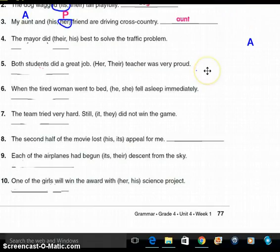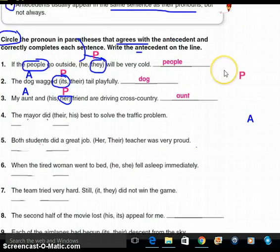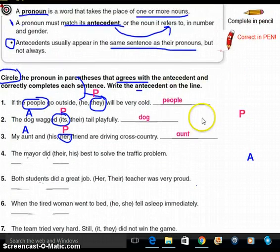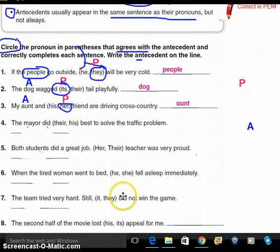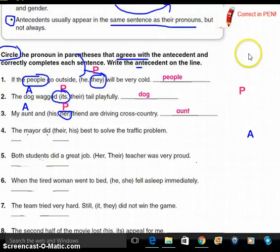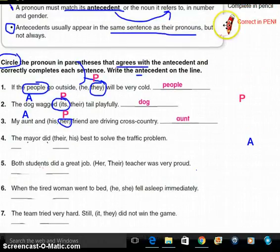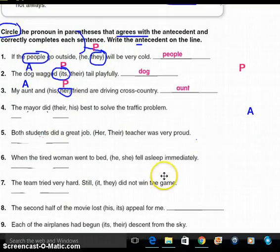Number five. Both students did a great job. Her, their teacher was very proud. Pause after each one if you need to. Number six. Number seven. The team tried very hard. Still, it, they, did not win the game. Eight. The second half of the movie lost his, its appeal for me. Number nine. Each of the airplanes had begun its, their, descent from the sky. Number ten. One of the girls will win the award with her, his, science project.